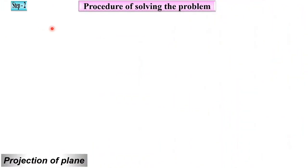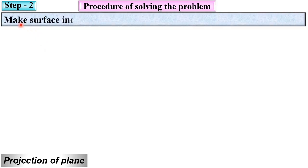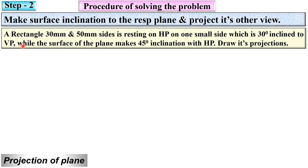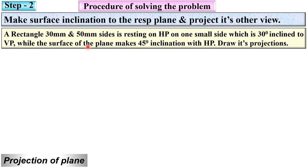In step 2, make the surface inclination either with respect to HP or with respect to VP. Consider this problem: it is given that the surface of the plane makes a 45-degree inclination with HP, so the surface inclination is given with respect to HP.